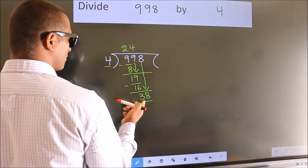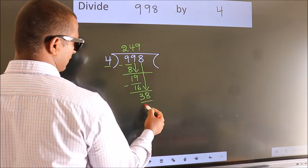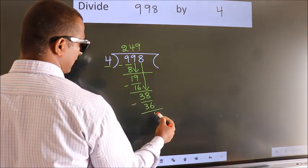A number close to 38 in 4 table is 4 nines, 36. Now we subtract. We get 2.